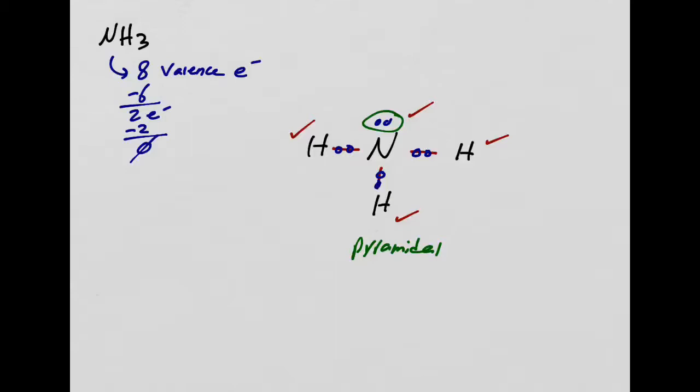The geometry: center atom, three bonds, one lone pair — that is also pyramidal. So NH3 is pyramidal.